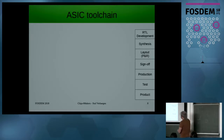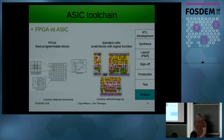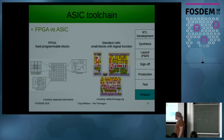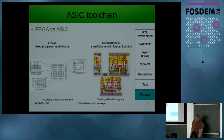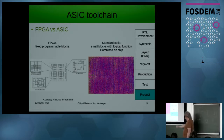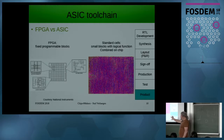So what is an ASIC toolchain? You have RTL code that you develop, then synthesis, layout, sign-off, production, test, and product. We've seen FPGAs in previous presentations — they have fixed programmable blocks. But an ASIC is made with what they call standard cells. Each standard cell has a certain functionality — there's a NAND gate, a half adder, a flip-flop — and you assemble a lot of these on a chip. The tools needed for an ASIC flow are different than for an FPGA flow.